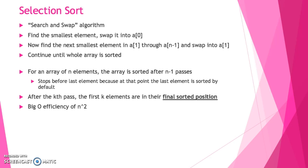For an array of n elements, this array is sorted after it does n minus 1 passes. The reason why this happens is because the algorithm assumes that by the time it gets down to that last element, that last element is sorted by default. An important thing to recognize is that after the kth pass, so after the 4th pass or the 3rd pass, k just represents how many times this algorithm has gone through. So after the kth pass, the first k elements are in their final sorted position.